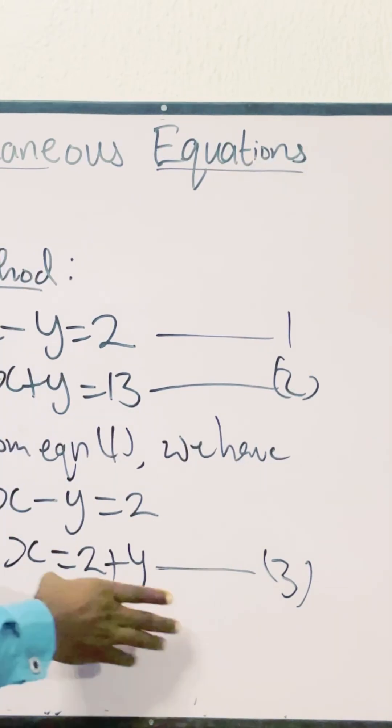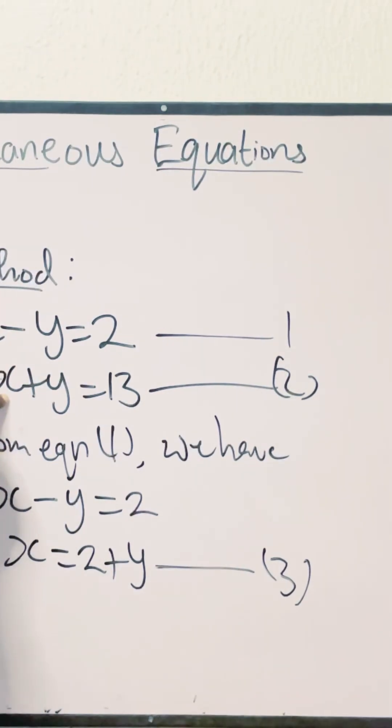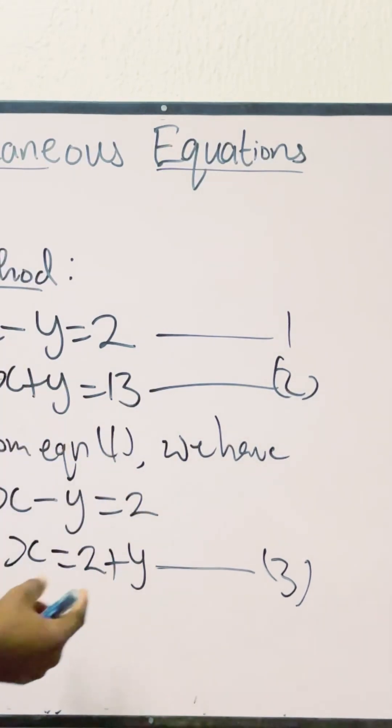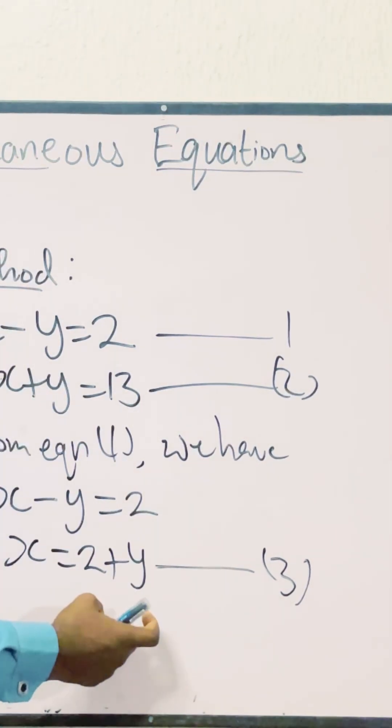This proves that 2 plus y represents x. Since the value of x in equation 1 is the same as the value of x in equation 2, whenever I see x, if I put 2 plus y in place of x, I'm still correct. And that's the whole essence of substitution.